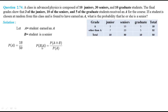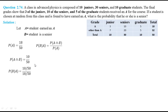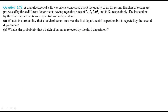The probability of B given A equals the probability of A intersection B divided by the probability of A, according to the conditional probability rule. The probability of A intersection B equals 10 by 50, since there are only 10 cases out of 50 who are both senior and received grade A. Substituting the probability of A intersection B and probability of A into the formula, we have probability of B given A equal to 10 by 18.